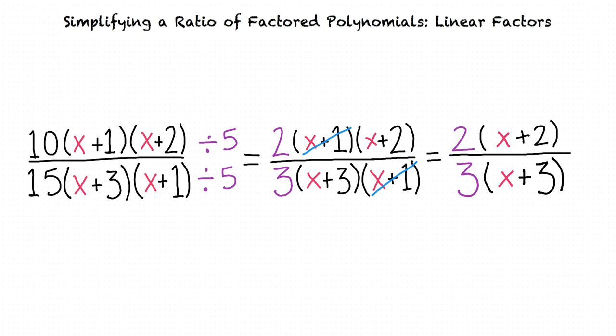How come we can't cancel the x plus 2 and the x plus 3? In order to cancel two factors, they have to be exactly the same. Since x plus 2 is not equal to x plus 3, their quotient does not equal 1, so they can't be factored out.